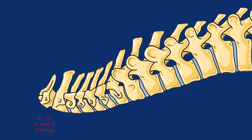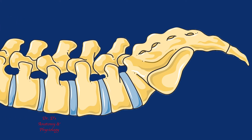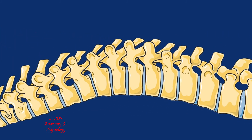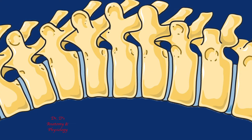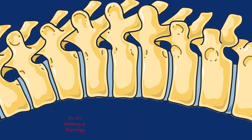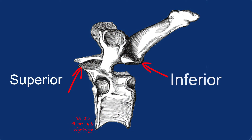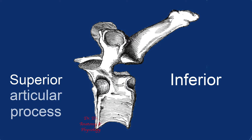As we go along the vertebral column, we can note that the vertebrae are going to change. They're going to have a basic structure, but the structure is going to change as we go from one region to the next. Now let's look more closely at the articular processes using the thoracic region. We can see where the articular processes are articulating with one another. If we isolate one thoracic vertebra, the articular processes extending superiorly are called the superior articular processes.